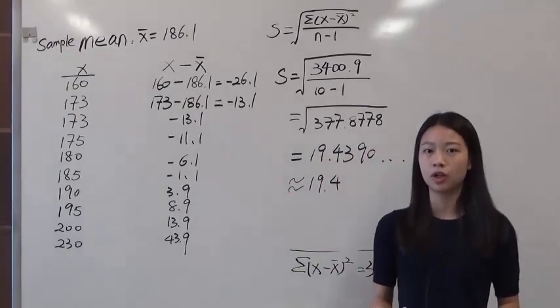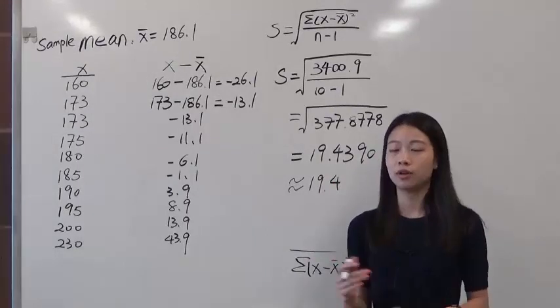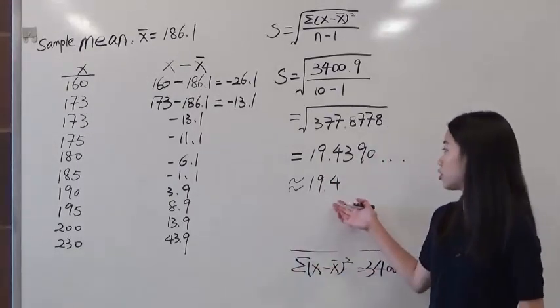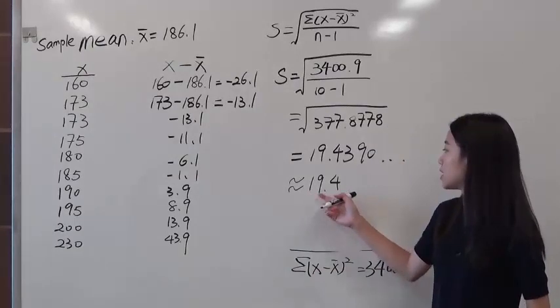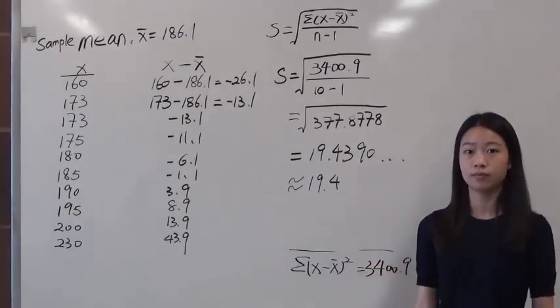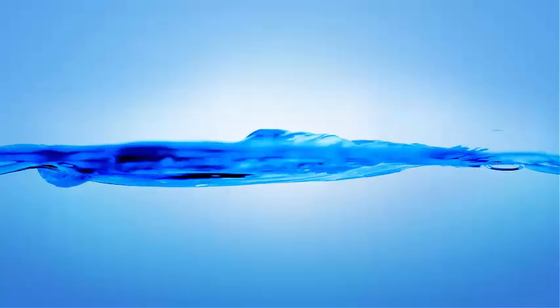However, you should always follow your instructor. If he or she wants to have two decimal places, the answer will be 19.44.